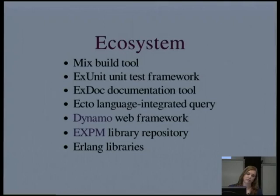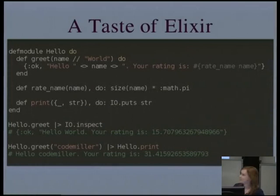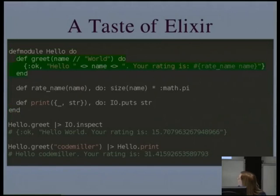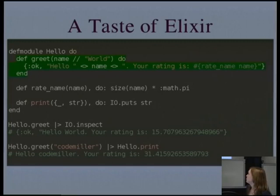What does this language look like? Here's a hello world written in Elixir. Everything in Elixir is an expression, so all this code could be in a single file without any problem. We've got a module defined with three functions. The function 'greet' takes a parameter called 'name' with a default value of 'world', and it returns a tuple — a two-element tuple with an atom called 'ok' and then a string, which is a binary. We're doing binary concatenation with angle brackets, and it has string interpolation.